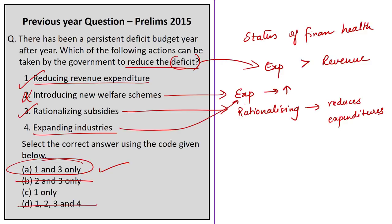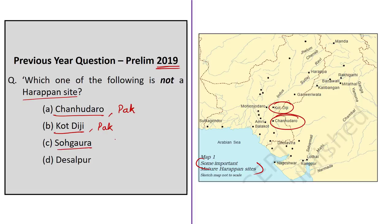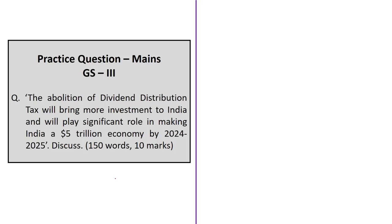A prelims question from last year asks: which one is not a Harappan site? Chanhudaro — a mature Harappan site in present-day Pakistan — is a Harappan site. Kodigi is also a Harappan site in present-day Pakistan. Sohgaura is not a Harappan site — it is known for a copper plate inscription in Gorakhpur district of Uttar Pradesh, with script and language similar to Ashokan inscriptions. Desalpur is an early mature Harappan site in Gujarat. The correct answer is Option C: Sohgaura.